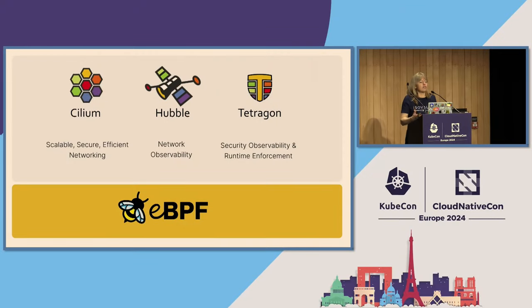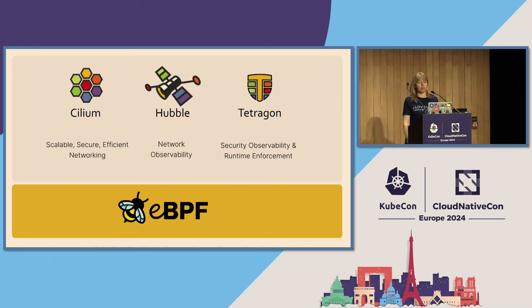Complementing that, there's Hubble, which provides network observability that you can use alongside Cilium. And then finally, there is the new cousin in the Cilium family, which is Tetragon. Anyone here using Tetragon? Quite a few of you. So runtime security and observability — all of these things based on the amazing technology that is eBPF. And I'm a massive fan of eBPF.